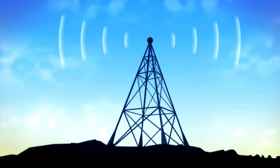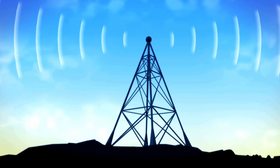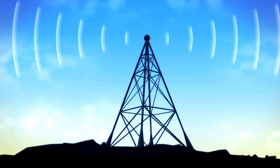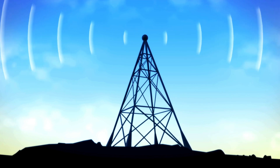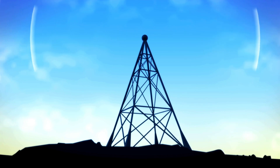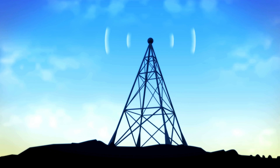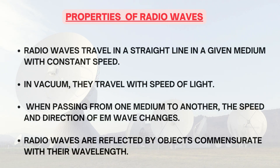In this lesson we will be focusing more on surface waves which travel along the surface of the earth and use lower frequency bands like VLF, LF and MF. Radio waves travel in a straight line in a given medium with constant speed. In vacuum they travel with speed of light, and when passing from one medium to another the speed and direction of the electromagnetic wave changes.